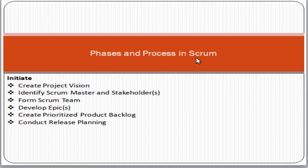What are the phases and processes in the Scrum framework? The first phase is the Initiation Phase. In the Initiation Phase, for example if you are implementing a software project, the first thing you do is create the Project Vision. Project Vision means defining what the customer wants from us — what are their objectives and aims for the whole implementation.